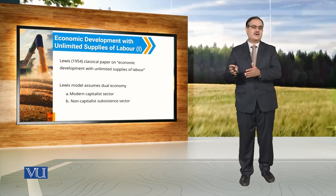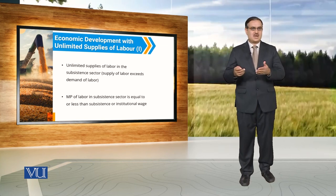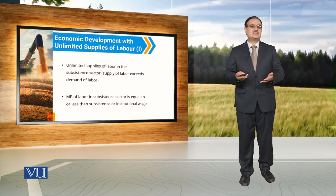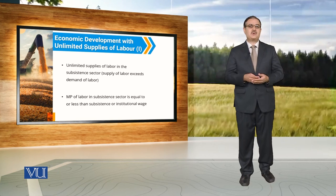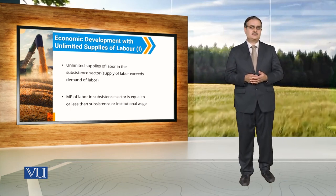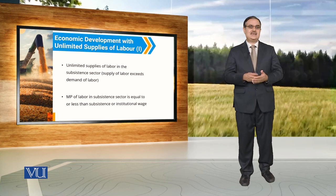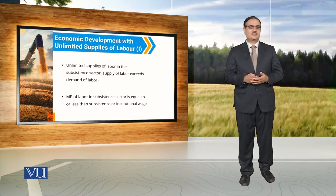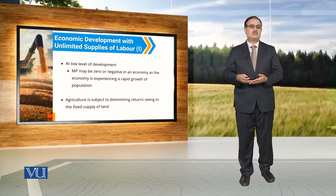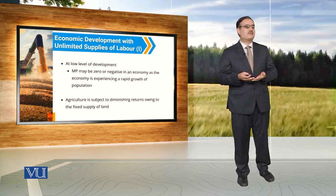One is the modern capitalist sector, which refers to the industrial sector, and the other is the non-capitalist subsistence sector, which refers to the agricultural sector. Jab aap subsistence sector ki baat karo ge, toh usne assumed kiya ke there is unlimited supply of labour in the subsistence sector — supply of labour is greater than demand for labour. Marginal productivity in the subsistence sector is equal to or less than the subsistence or institutional wage. At a low level of development, marginal product may be zero or negative, as the economy is experiencing rapid growth of population. Agriculture is subject to diminishing returns owing to the fixed supply of land.